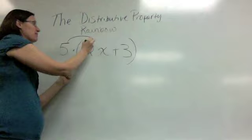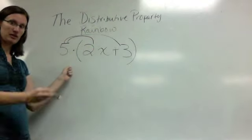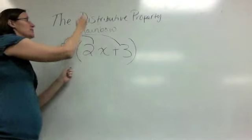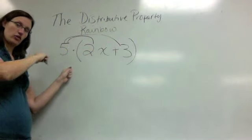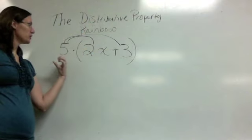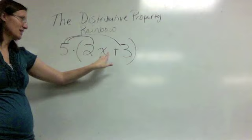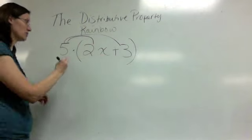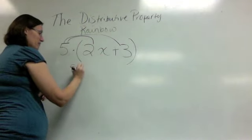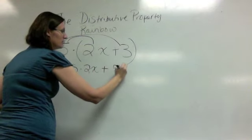This means we want to take 5 times 2x and 5 times 3. This is where you can kind of see where it gets the rainbow nickname. You're going to rainbow in the multiplication. We are going to distribute the multiplication of 5 to the 2x and the 3. So this easily becomes 5 times 2x and 5 times 3.